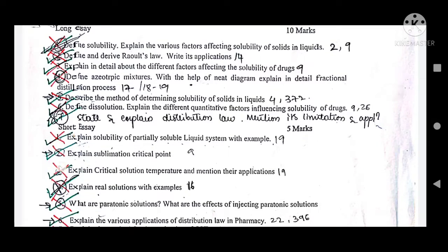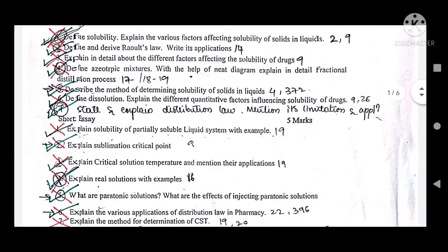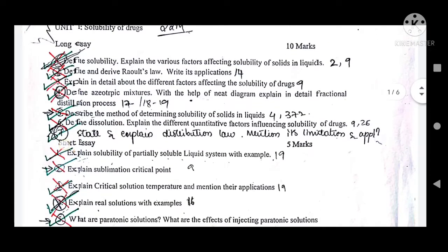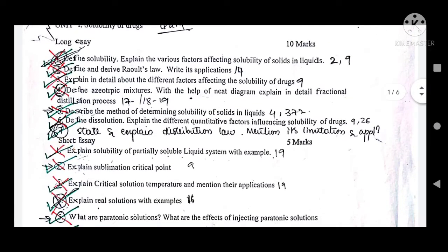The sixth question is: define dissolution and explain the different quantitative factors influencing solubility of drugs. Note that this question is essentially the same as question number three — explain in detail the different factors affecting the solubility of drugs. Questions three and six are equal.